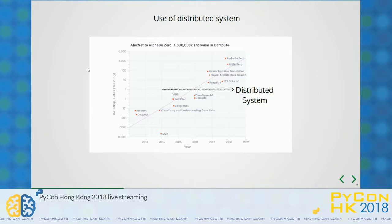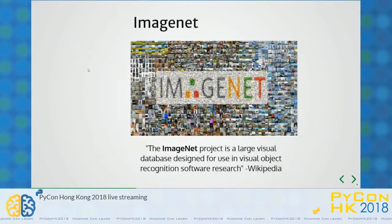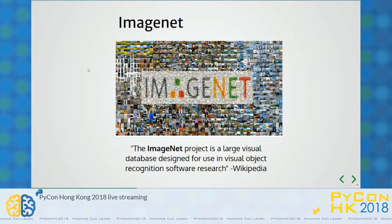Without a distributed deep learning system, you couldn't match the performance as well as the accuracy of the result. What is ImageNet? The ImageNet project is a large visual database designed for use in visual recognition software research, as defined by Wikipedia. It has millions of images to train on and about a hundred thousand images to test — it's a pretty niche platform to evaluate results.